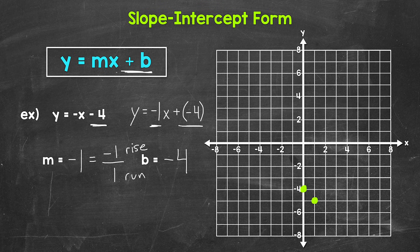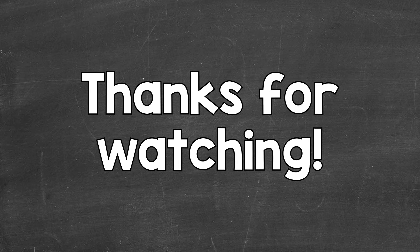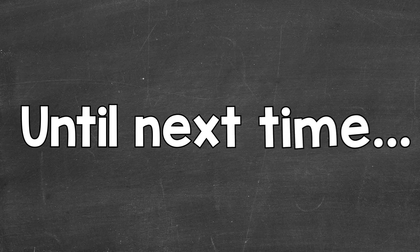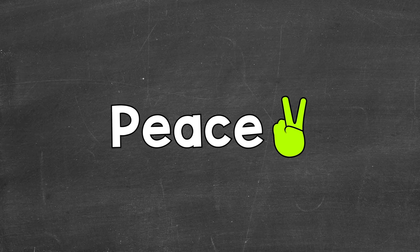Once we have those two points, we can draw our line through the points — and that's our line. You'll notice since we have a negative slope, the line is moving downward as it moves from left to right. So there you have it — that's how to graph a line in slope-intercept form with a slope of negative one. I hope that helped. Thanks so much for watching. Until next time, peace.